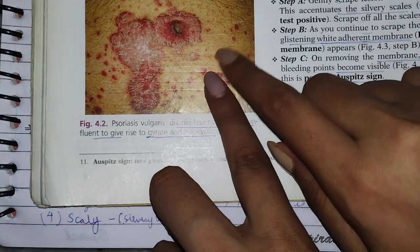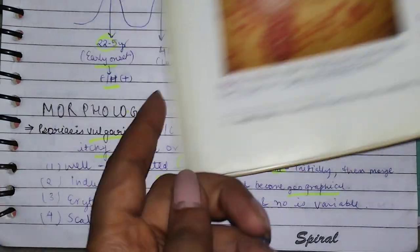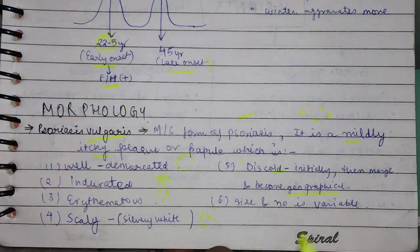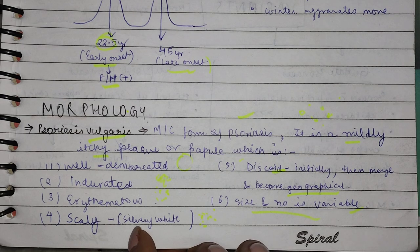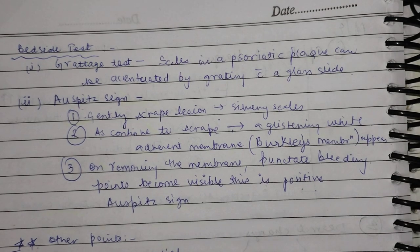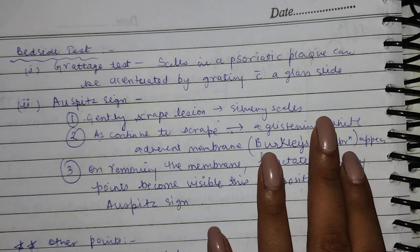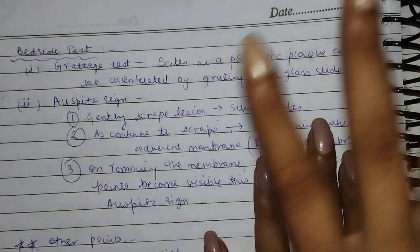You can start with small patches and then they merge into a geographical area. The size and number can be variable. You can do two bedside tests to confirm the diagnosis. There are many conditions like eczema and seborrheic dermatitis that are differential diagnoses. In the bedside test, there are two tests. The first one is the grattage test — the scales are scraped in a glass light manner.